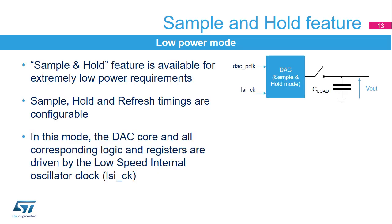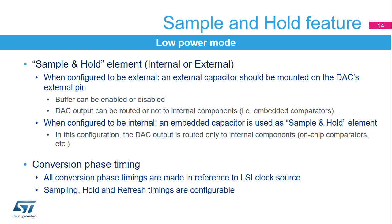When the DAC is configured in sample and hold mode, it is able to generate its converted output voltage and active circuitry can be turned off. In this mode, the DAC core and all corresponding logic and registers are driven by the LSI clock (LSICK), in addition to the DAC PCLK clock, allowing usage of the DAC channels in deep low power modes such as stop mode. The logic in charge of scheduling refreshes only requires the LSI clock. In doing so, the DAC is only active during very low duty cycles — sample and refresh — resulting in very low power consumption. The duty cycle program is very flexible and autonomous.